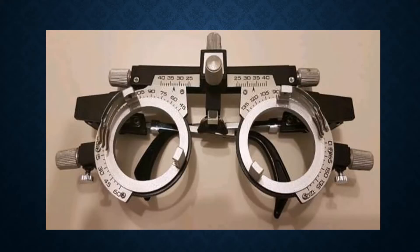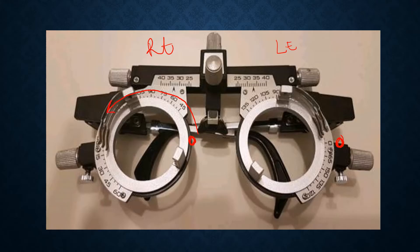To understand retinoscopy in the astigmatic eye, it is very important to understand the measurements depicted on a trial frame. Zero degrees is always present on the left side of the patient, or the right side of the examiner, and measurements increase in the anticlockwise direction — so 0, 10, 20, 30, 45, 60, 75, 90, and so on. This applies to both right and left eyes. Always remember that 180 degrees is present on the right side of the patient, whether it is the right eye or the left eye.